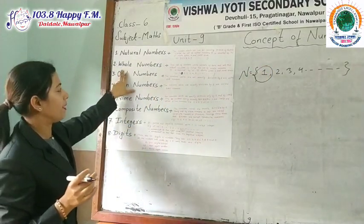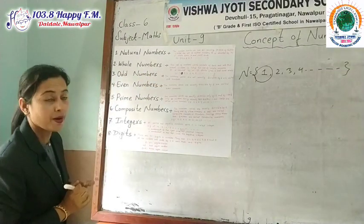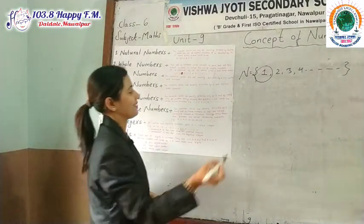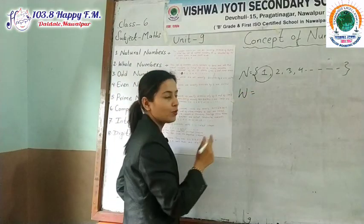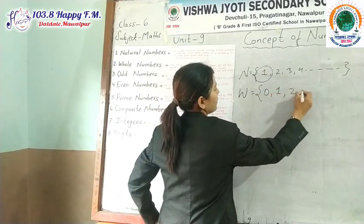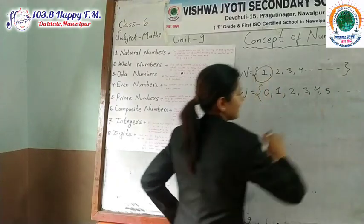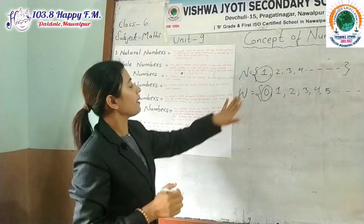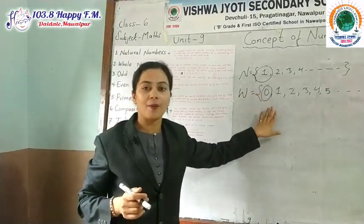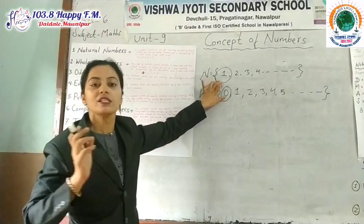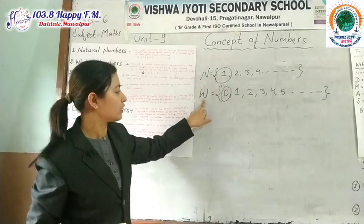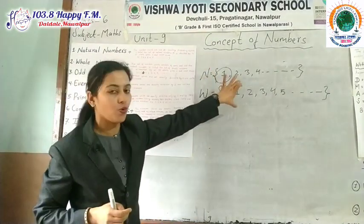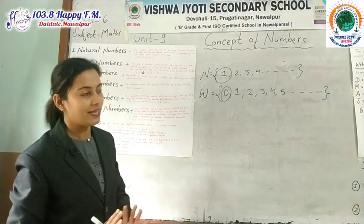The next topic is whole numbers. Whole numbers means the set of numbers which consists of 0 and all the natural numbers. Whole numbers are denoted by W and start from 0, 1, 2, 3, 4, 5 and so on — they also never end. The difference is that natural numbers start from 1 and whole numbers start from 0. The smallest natural number is 1, but the smallest whole number is 0. So all natural numbers are whole numbers, but all whole numbers are not natural numbers.